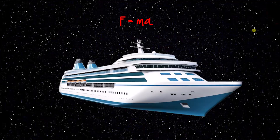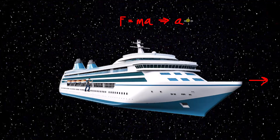Let's say we have a cruise ship in empty space, and it's perfectly still. A person comes along and is going to push on the cruise ship. To make things simple, we're going to assume the person pushes right at the center of mass of the ship, so the ship is not going to spin — the push is just going to cause the ship to move without spinning in one direction. If the person pushes with a force of 20 pounds, we can calculate this with Newton's second law. The acceleration of the ship in the direction the force is applied is equal to that force divided by the mass of the ship.